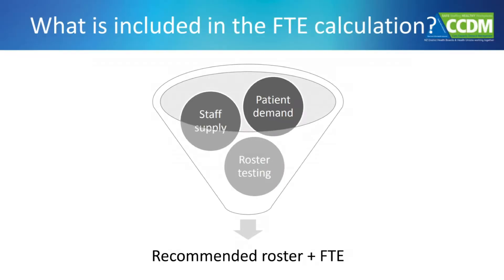The FTE for each ward should be recalculated annually prior to the DHB's annual budget setting process. What's included in the FTE calculation?